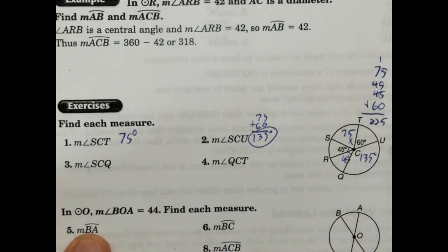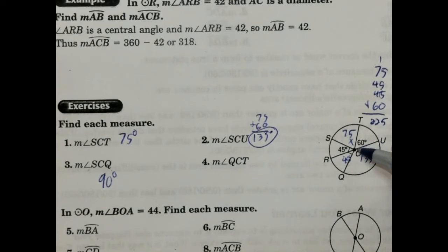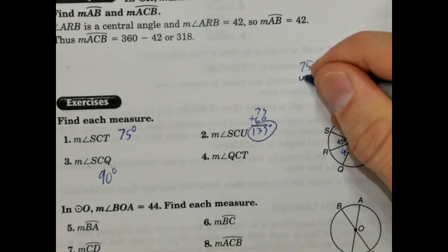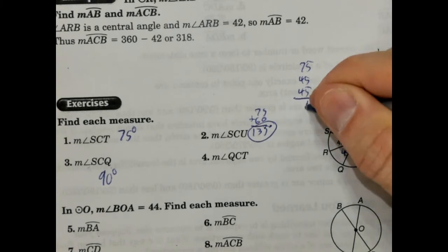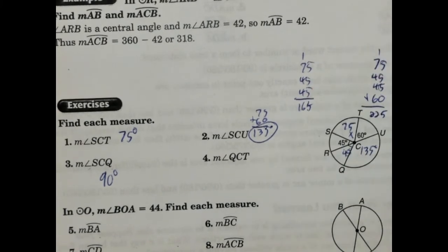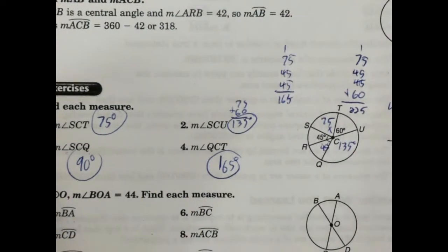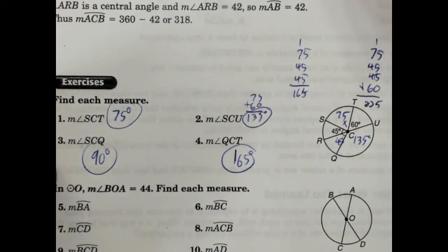So SCQ, which is this angle here, that's 90 degrees. And then QCT would be this one. Now you may be asking yourself, how do I know it's going to be this angle here and not that angle there? Because technically it's two angles. You're going to go with the smaller one of the two. So it's going to be these three added together. We're going to write 75 plus 45 plus 45, which is 165 degrees. And that's how you'd find those four angles.